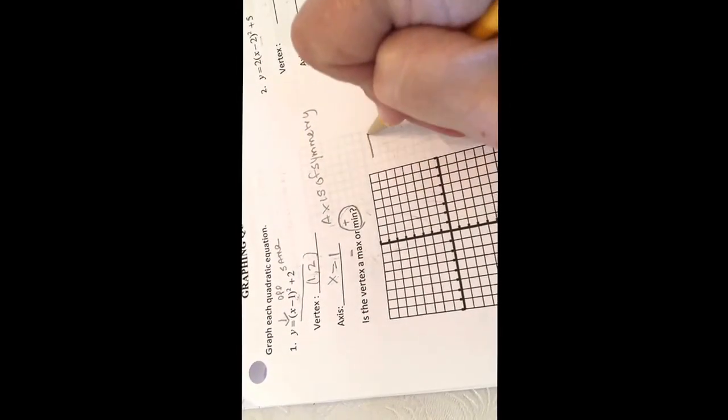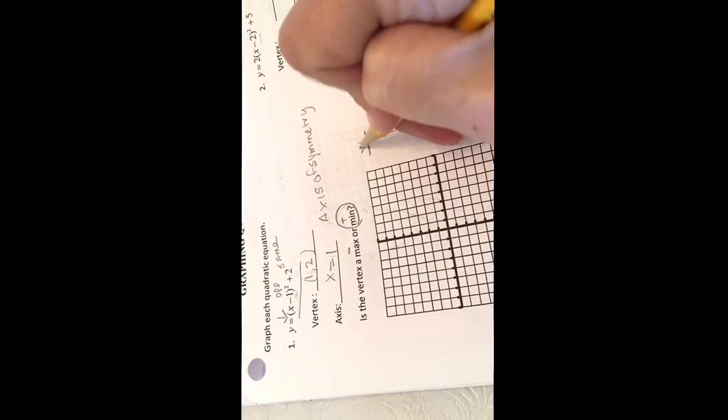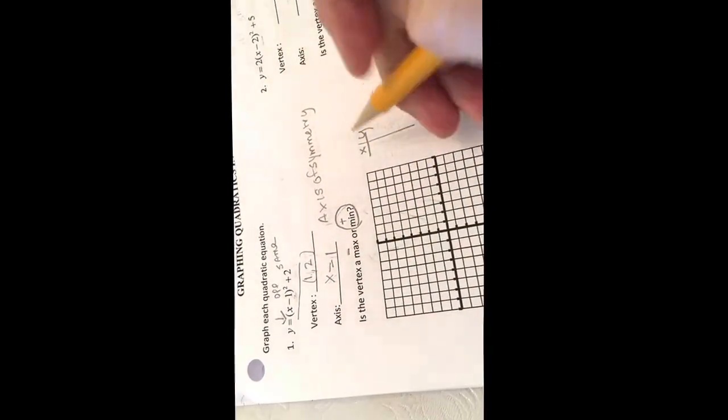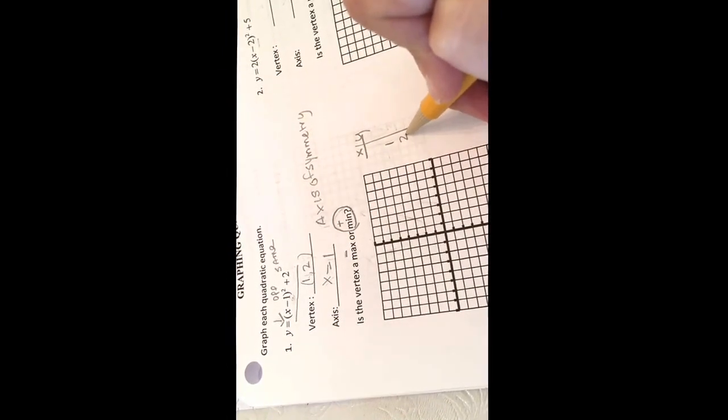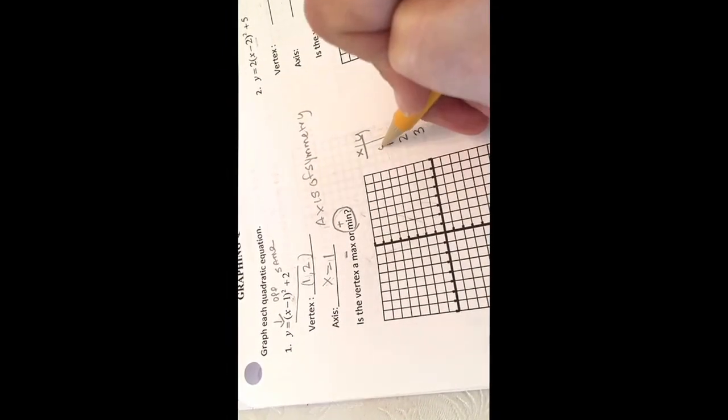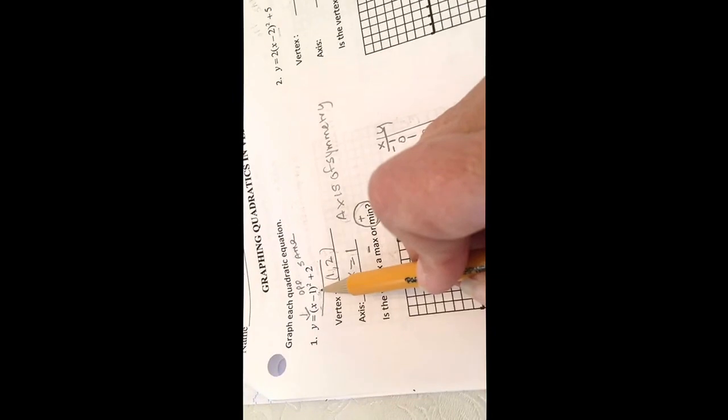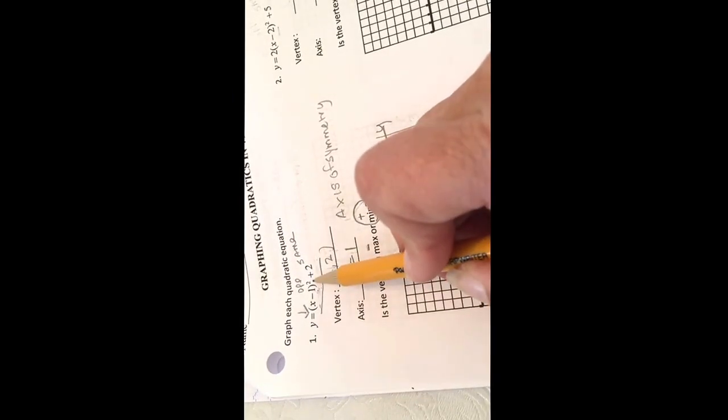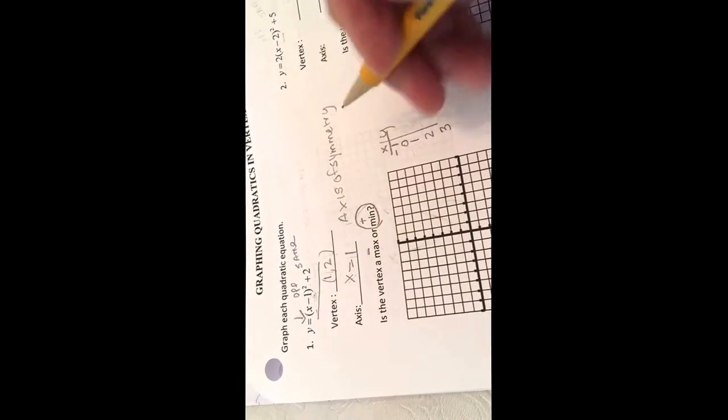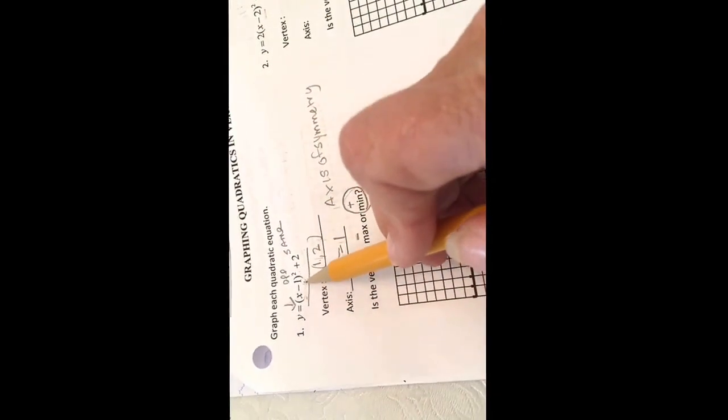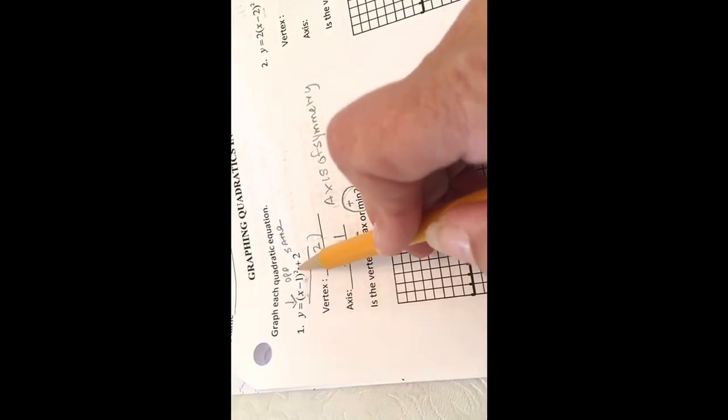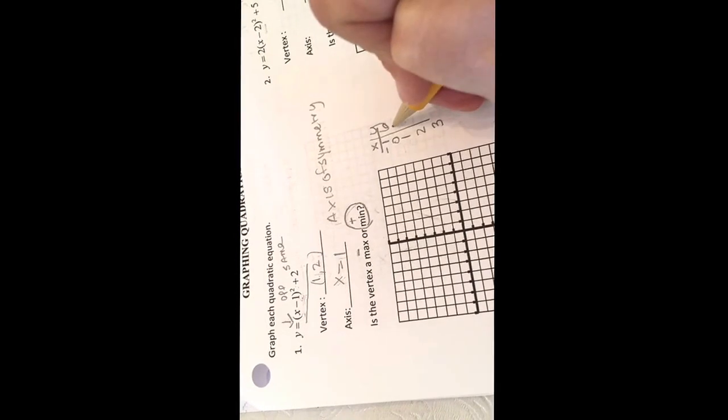Now we need to make a little table x, y. This is 1, 2, 3, 0, negative 1. Negative 1 minus 1 is negative 2. Negative 2 squared is 4 plus 2 is 6. 0 minus 1 is 1. 1 squared is 1 plus 2 is 3.